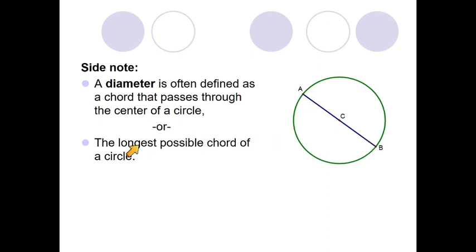You might also see it sometimes defined as the longest possible chord of a circle, and I think that makes sense because the further a chord is to the outside of a circle, the shorter it's going to be. As we work our way towards the middle of the circle, the longer those chords get. So if we're talking about a diameter like diameter AB, that's going to be the longest possible chord of a circle.